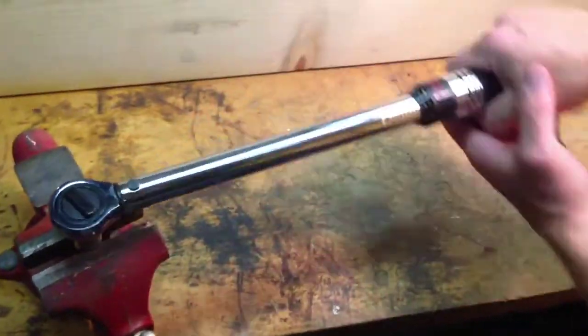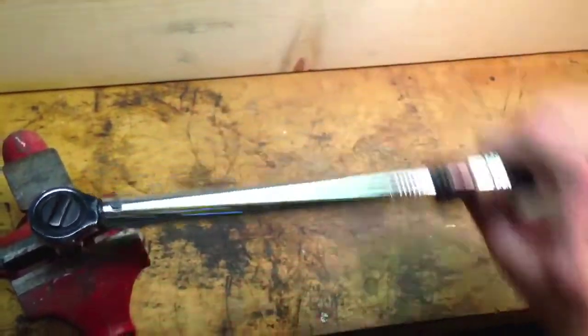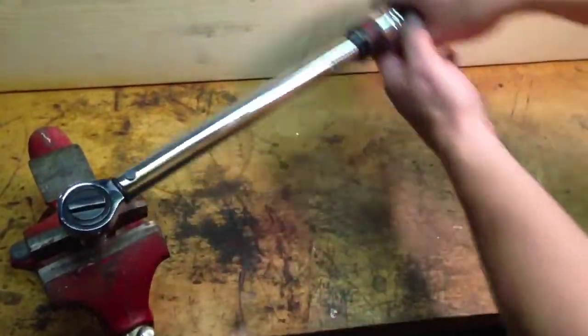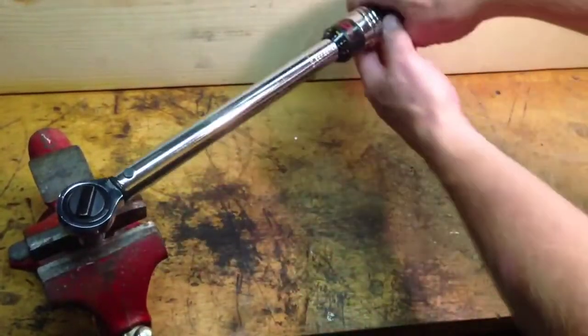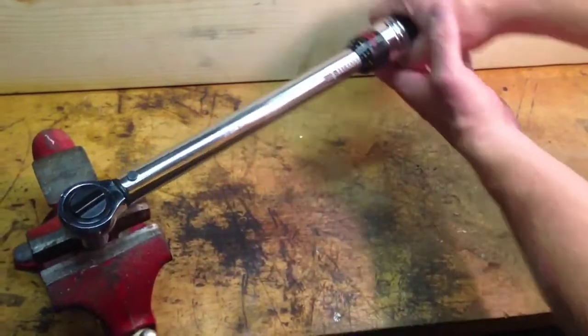Now when you're tightening the bolt, you want to make sure you're holding the handle, not the neck of the torque wrench. That's the only way you're going to get an accurate measurement, is by holding the handle.